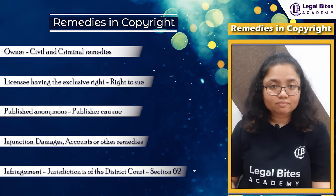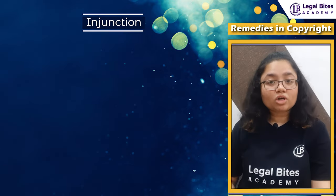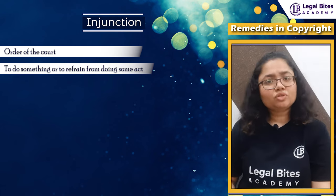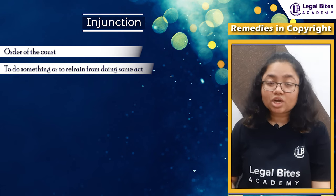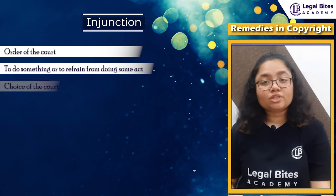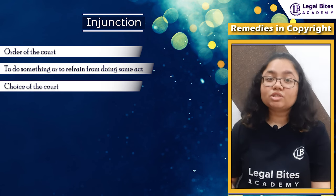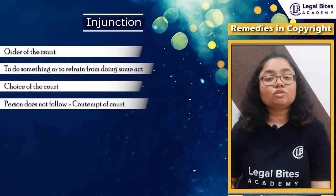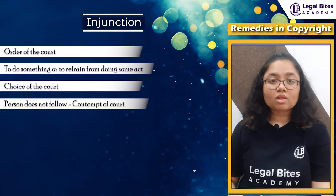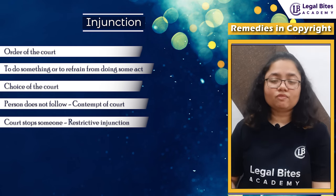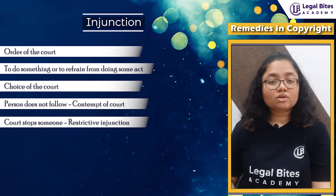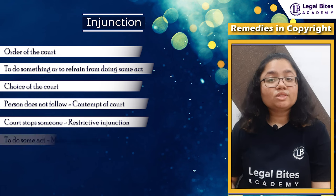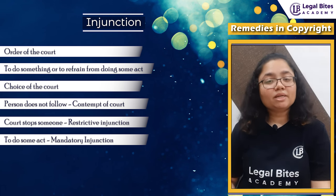The first civil remedy is injunction. Injunction is an order of the court where the court orders a person to do something or to refrain from doing some act. To give injunctive relief or not is the choice of the court. If the injunction is ordered and the person does not follow it, it amounts to contempt of court. When the court stops someone from doing some act, it is called restrictive injunction. When the party is ordered to do some act, it is called mandatory injunction.